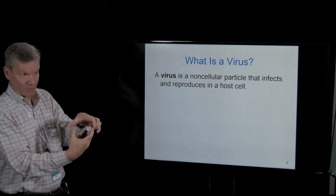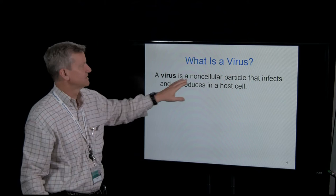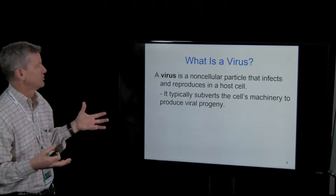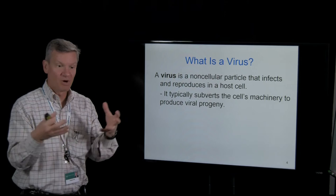A virus, even though we show a round or elongated virus, is not a cell. A virus is a non-cellular particle. What the virus does is it takes over or subverts the cell's machinery and produces more of itself. Viral progeny means it produces more of itself.